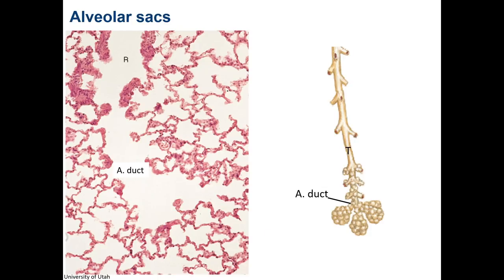Large clusters of alveoli, called alveolar sacs, form the ends of alveolar ducts and occur occasionally along their length. The lamina propria is now quite thin, consisting of a web of elastic and reticular collagen fibers that closely surrounds each alveolus, and a network of capillaries also surrounds each alveolus.